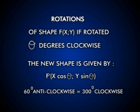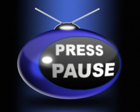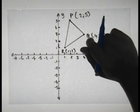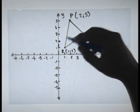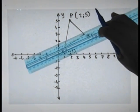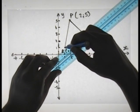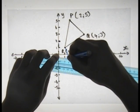Have a go at the following examples. Press pause on your DVD player and when you return we'll go through it together. We are now going to look at transformations that are not 90 degrees or 180 degrees and don't have a standard simple rule. I'm going to look at the example of 60 degrees.